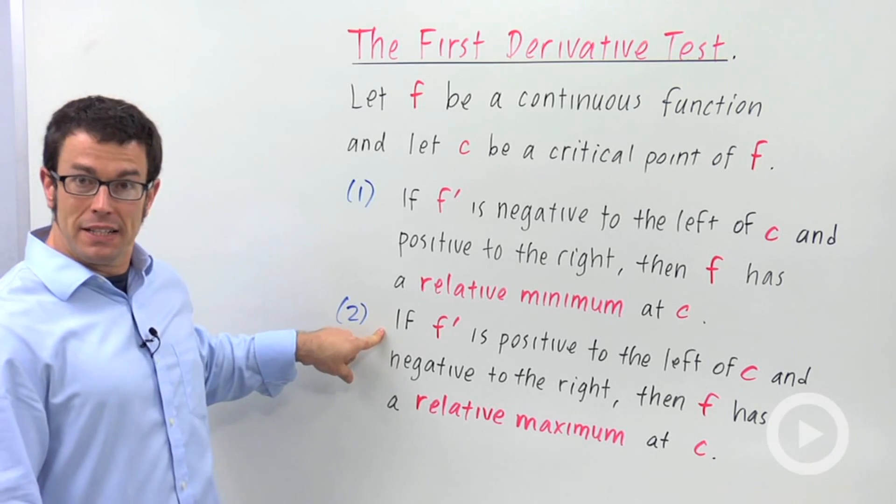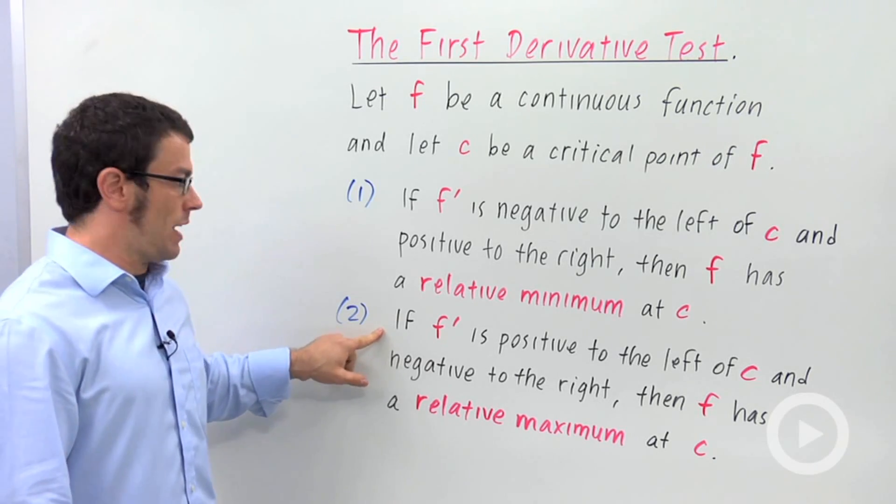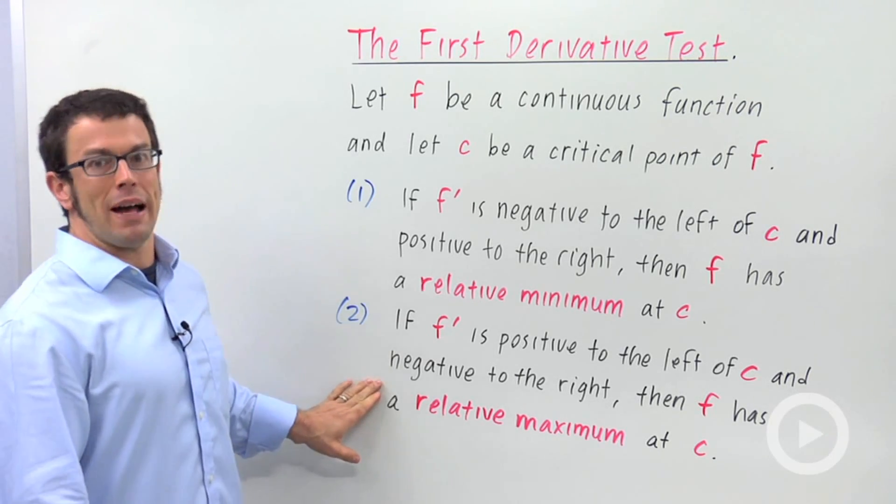And if f prime is positive to the left of c and negative to the right, then f has a relative maximum at c.